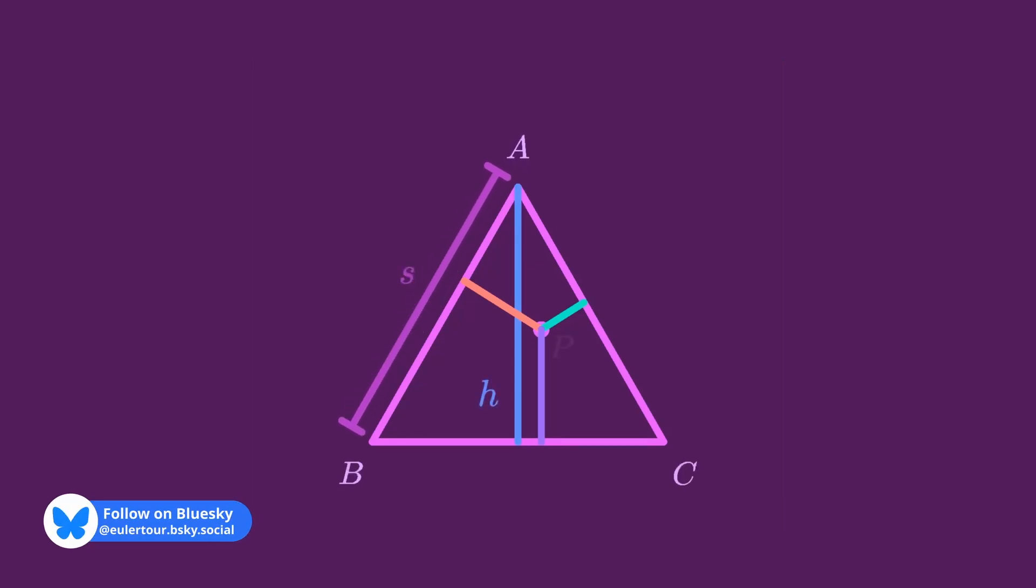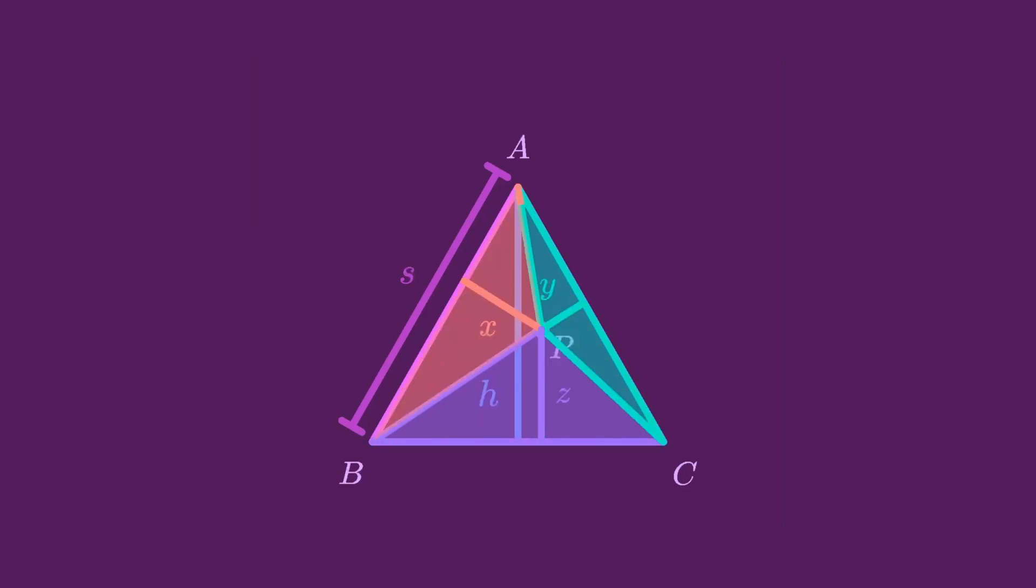We'll pick a random point on the triangle to be P and label the distances from P to the sides of the triangle X, Y, and Z. From here we can draw three more triangles with the sides of the original triangle as their bases and X, Y, and Z as their heights.